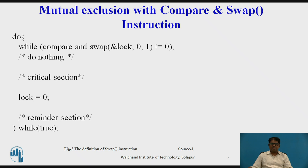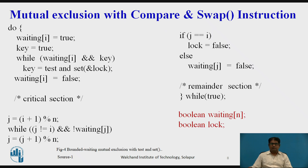The common data structures are initialized to false. To prove that the mutual exclusion requirement is met, we note that process Pi can enter its critical section only if either waiting[i] is false or key is false. The value of key becomes false only if the test-and-set is executed. The first process to execute test-and-set will find key equal to false; all others must wait.